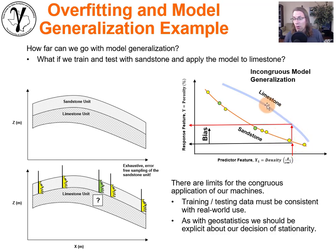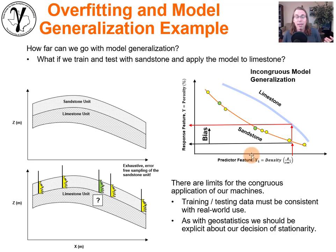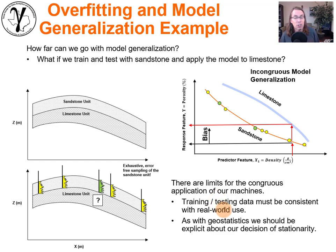Imagine the case where I say: I built a rock model, I'm doing fine — it's all rock — and I'm going to assume stationarity. Now the limestone truth model would look something like that, depending of course on the rock lithology. The sandstone model looked different. We're now in a situation with a significant level of bias — our model is quite incorrect. There are limits for the congruous application of our models, and we must be consistent in training, testing, and real-world use.